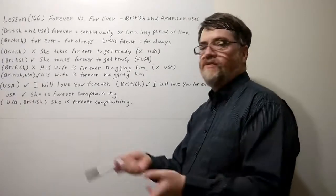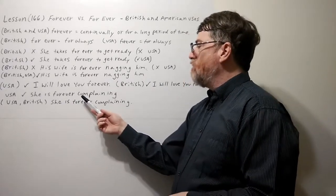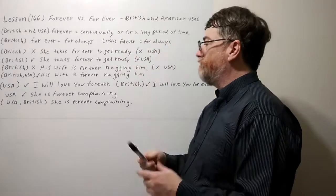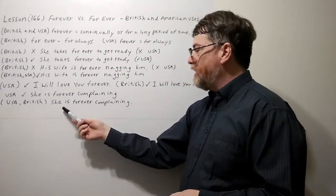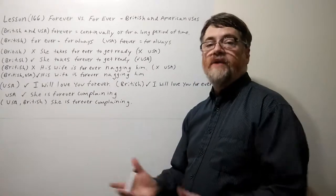Okay, and let's just finish it off down here. In American English you say she is forever complaining, meaning continually for a long period of time. But here, both in American English and British English you could say she is forever complaining too. So it's okay for both of them.